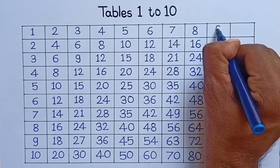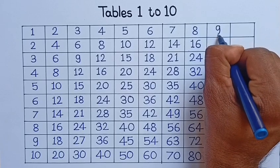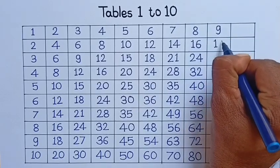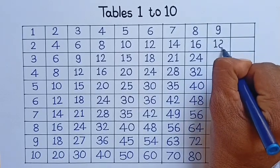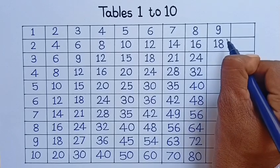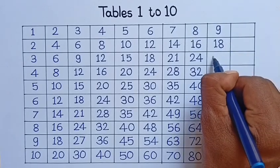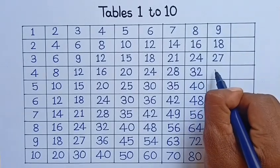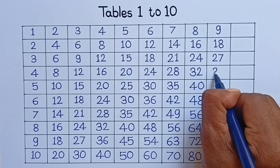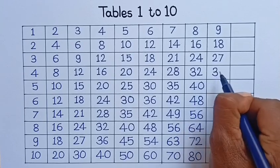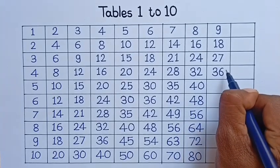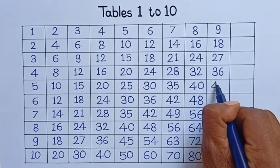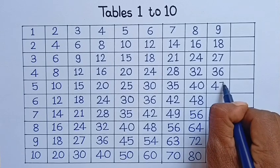9, 1 is 9. 9, 2 is 18. 9, 3 is 27. 9, 4 is 36. 9, 5 is 45.